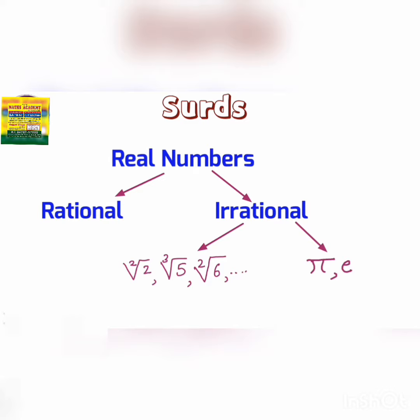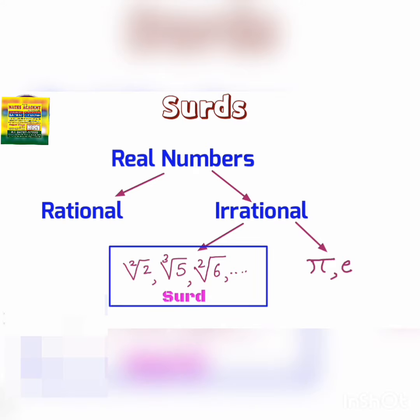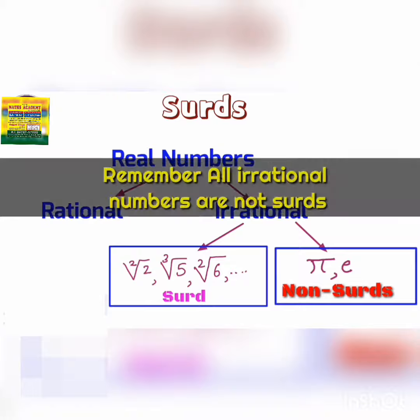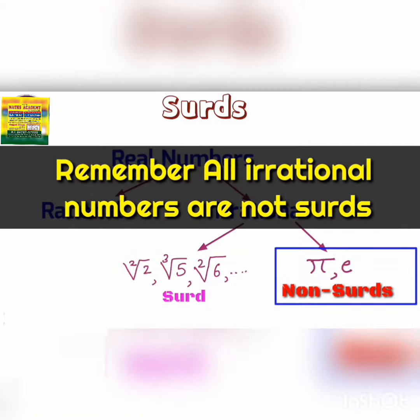There is another special category of irrational numbers — those are pi and e, that is Euler's number. This category of irrational numbers is called surds, whereas pi and e are not surds. We just wanted to clarify the common misconception that all irrational numbers are surds, which is incorrect.